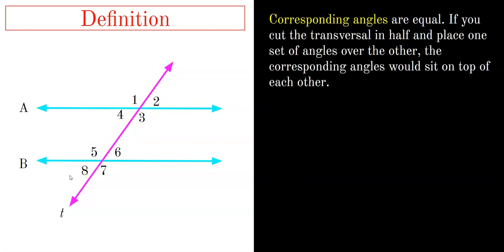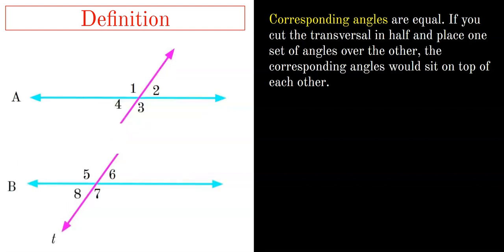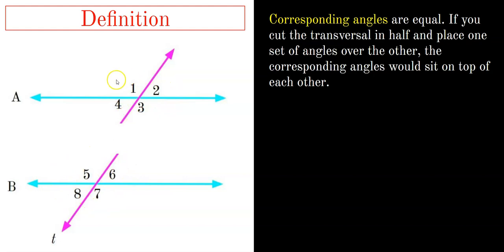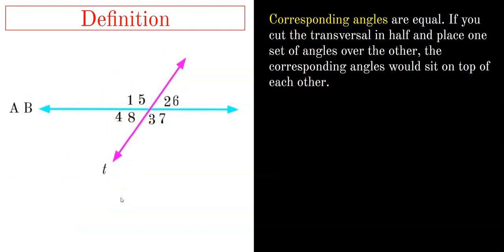Another definition is corresponding angles, which are equal. If you cut the transversal in half and place the line B set of angles on top of the line A set, all of those angles will overlap. This means angle 1 equals angle 5, angle 2 equals angle 6, angle 3 equals angle 7, and angle 4 equals angle 8.